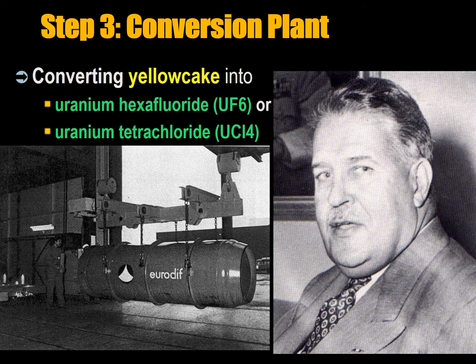Step three is the conversion plant. It takes the purified yellow cake and converts it into a gas called uranium hexafluoride, or UF6. You can also convert it into uranium tetrachloride, UCl4, another type of gas. For this you need a conversion plant, and then this gas is sent on to an enrichment plant. You'll see why it has to be in gas form.